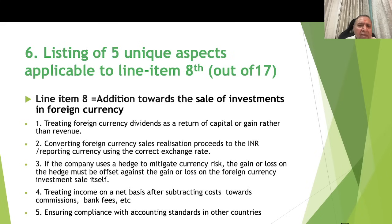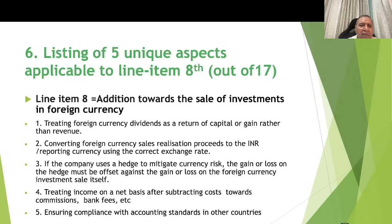For line item 8 — addition towards sale of investment in foreign currency — five unique aspects apply: treating foreign currency dividend as a return on capital or gain rather than revenue; converting the foreign currency sales proceeds into the reporting currency using the correct exchange rate; if the company uses a hedge to mitigate currency risk, the gain or loss on the hedge must be set off against the gain or loss on the foreign currency investment sale; treating income on a net basis after subtracting commission and bank fees; and ensuring compliance with accounting standards in other countries if the dividend is coming from overseas.